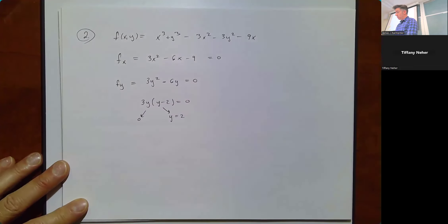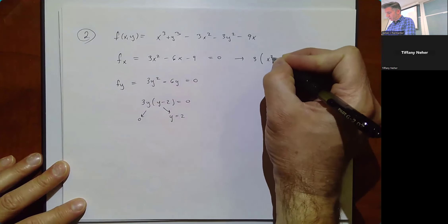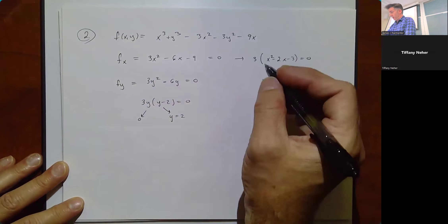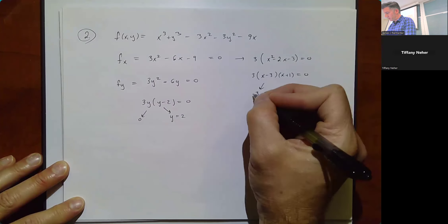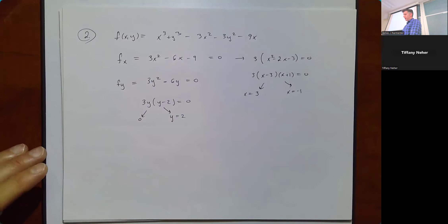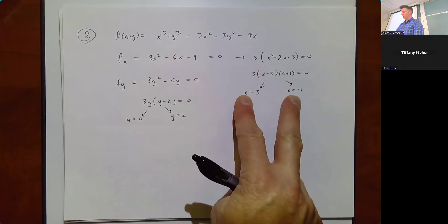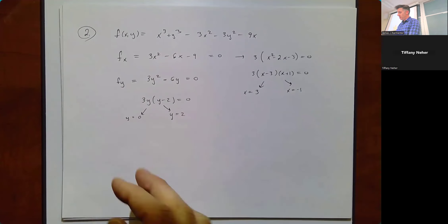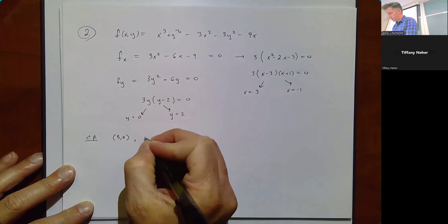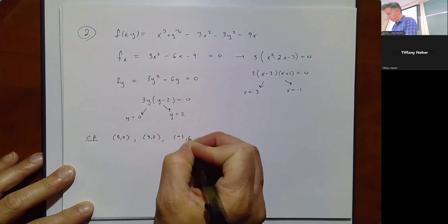Solving fy = 0: factor out 3y to get 3y(y - 2) = 0, giving y = 0 or y = 2. For fx = 0: factor out 3 to get 3(x² - 2x - 3) = 0, which factors as 3(x - 3)(x + 1) = 0, giving x = 3 or x = -1. Each x-value pairs with each y-value, so we have 4 critical points: (3, 0), (3, 2), (-1, 0), and (-1, 2).